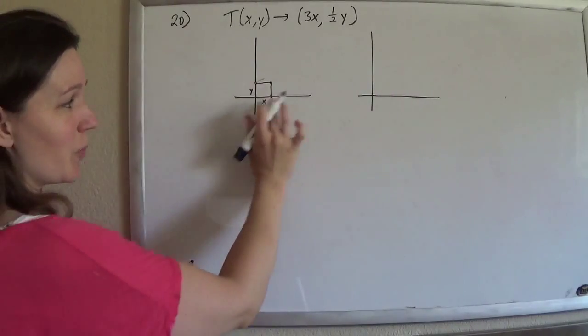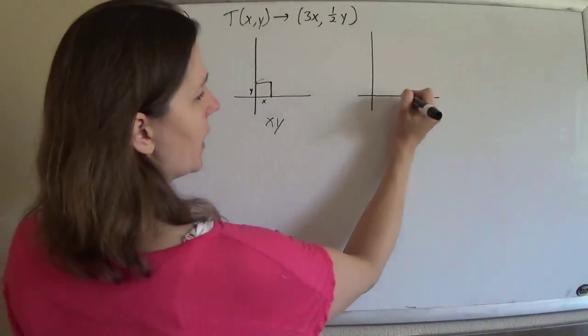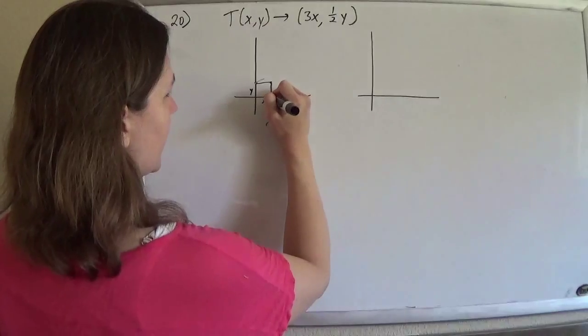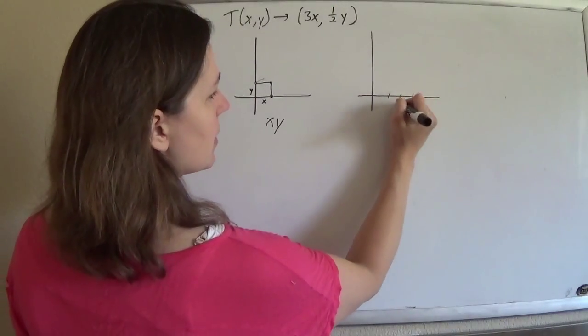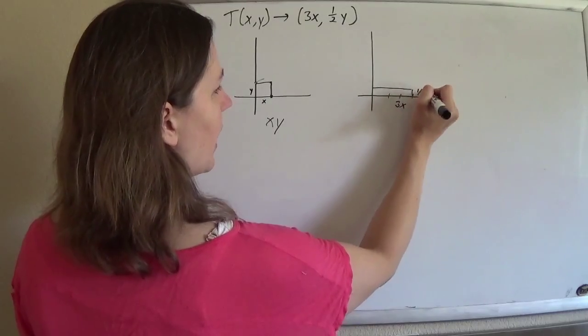So if you just look at one unit of area, the original area would be x, y. And then if you transform it so that this point here becomes 3x, and then that guy there becomes 1 half y.